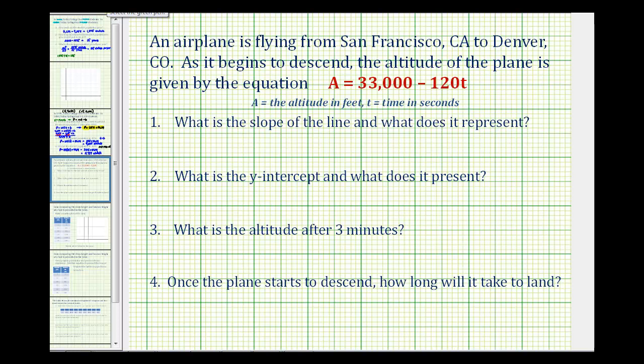An airplane is flying from San Francisco, California to Denver, Colorado. As it begins to descend, the altitude of the plane is given by the equation A equals 33,000 minus 120T, where A is the altitude in feet and T is the time in seconds. We want to answer the following questions.